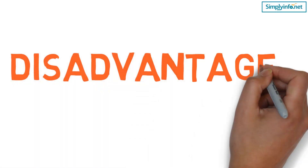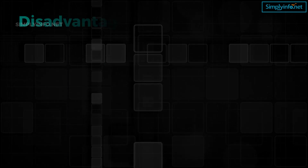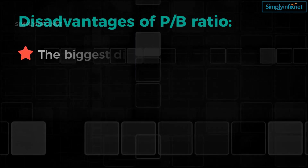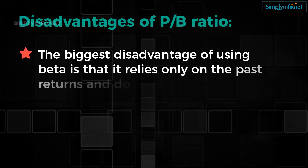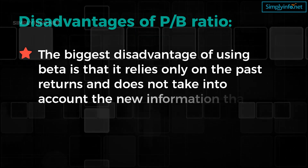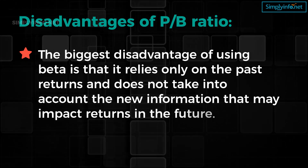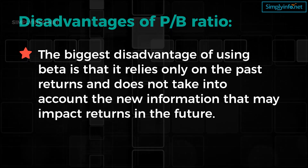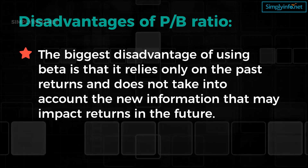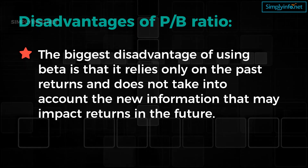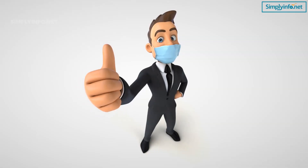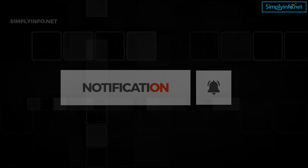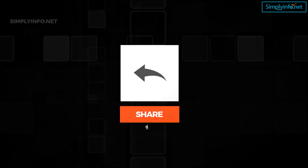Disadvantages of using the beta coefficient: the biggest disadvantage of using beta is that it relies only on past returns and does not take into account new information that may impact returns in the future. Thank you so much for watching — please like this video and do share.